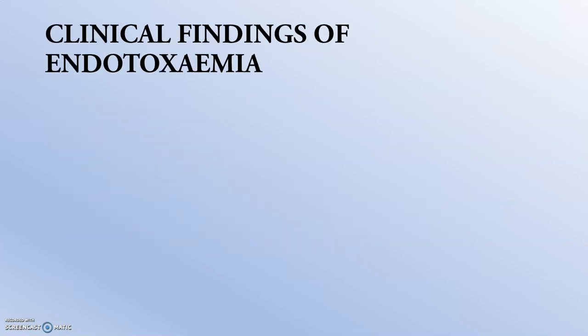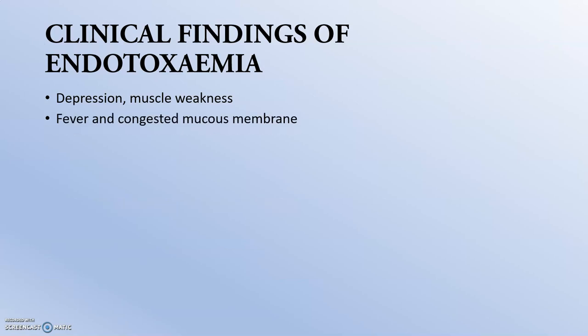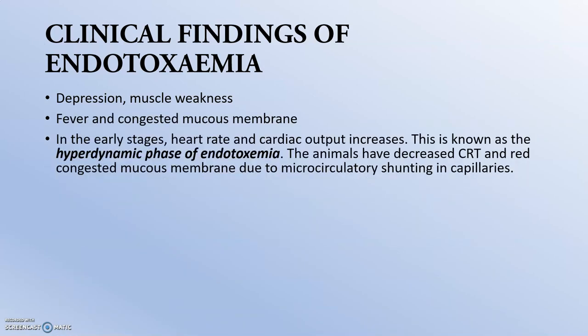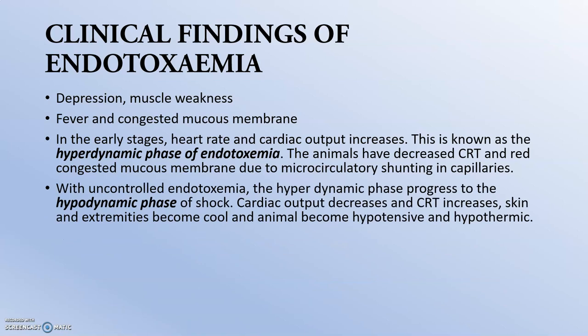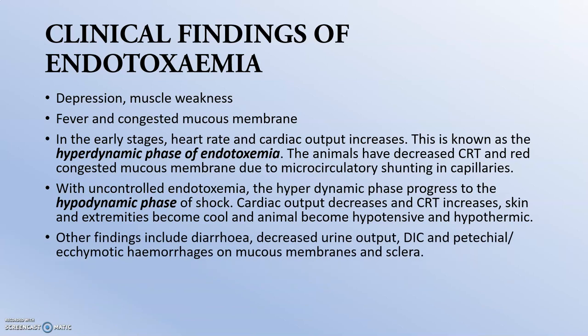Clinical findings of endotoxemia: due to the widespread presence of toxins, they produce depression, muscle weakness, fever, and congested mucous membranes. In the early stages, heart rate and cardiac output increase due to vasoconstriction — this is known as the hyperdynamic phase of endotoxemia. Next is the hypodynamic phase, where uncontrolled endotoxemia leads to decreased cardiac output; the animal becomes hypothermic and hypotensive. Other findings include diarrhea, as endotoxemia mainly acts on the gut region, and decreased urinary output when acting on the kidney tubules.